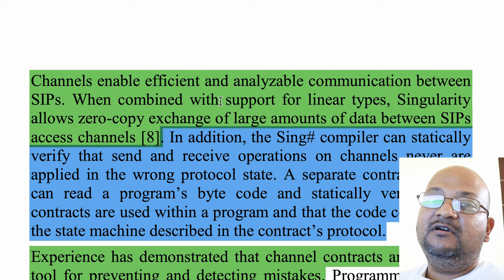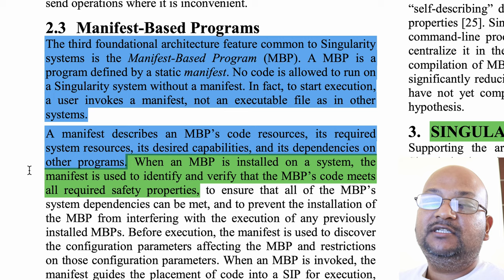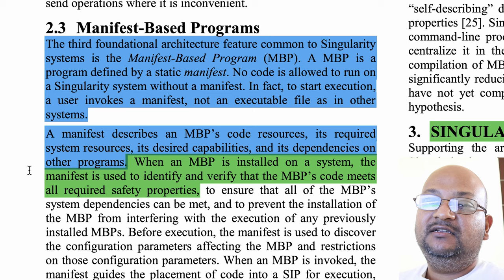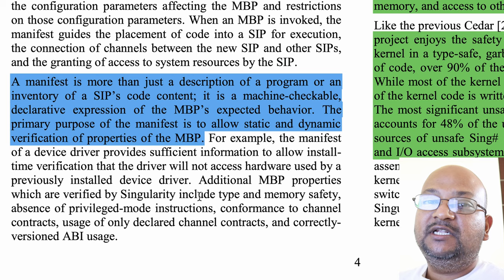The third key design choice that Singularity made was to explicitly list all of a program's key resources, its capabilities, and its dependencies in a manifest. Every program in Singularity must have a manifest. The main advantage of listing out all these things explicitly is that the system can enforce all these safety properties — some statically and some dynamically at runtime.